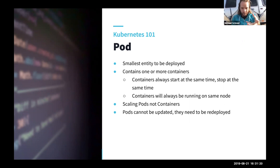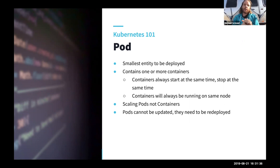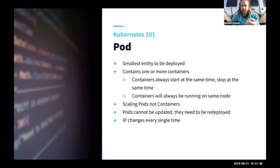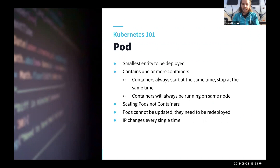Something that might sound surprising: pods cannot actually be updated. You cannot go into a pod and change the Docker image for a container or change an environment variable. Kubernetes will prevent this — if you want to change a pod, create a new pod and remove the old one. Similarly, each pod in a Kubernetes cluster gets an automatically assigned IP address that changes every single time a pod comes up. It's not predictable, so we need another mechanism to handle this.